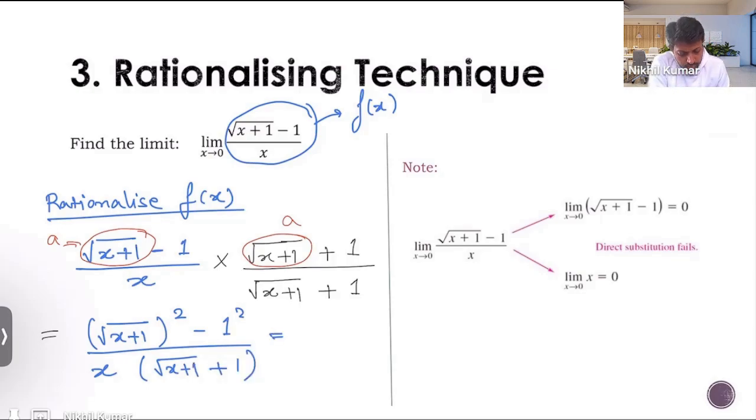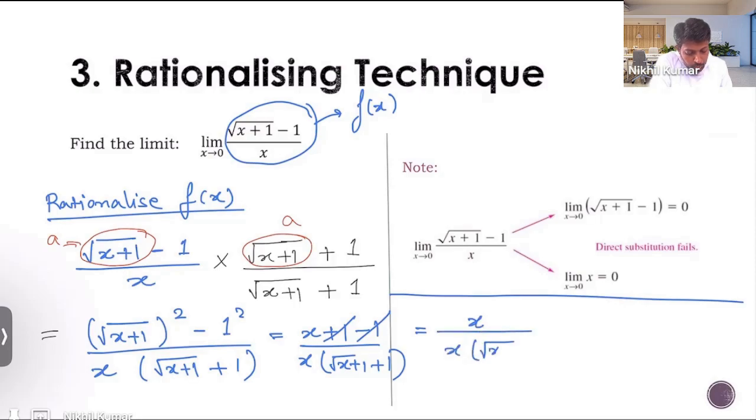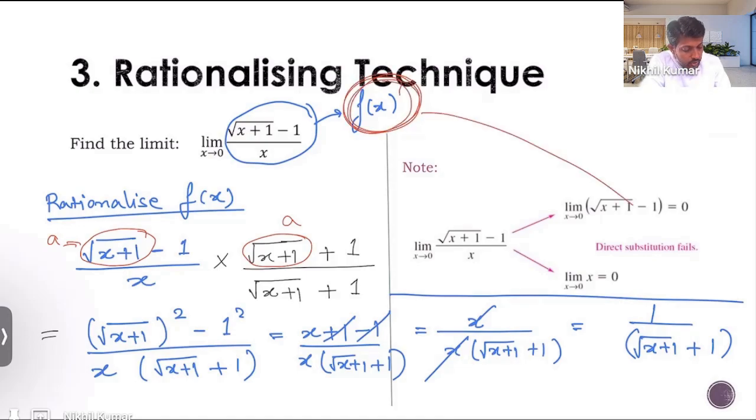Square of square root of x plus 1 simply gives me x plus 1. And then we have minus 1 there. In the denominator, we have the same thing x into root x plus 1 plus 1. Now, plus 1 minus 1 gets cancelled. This can be written as x upon x into root x plus 1 plus 1. x and x in the numerator and denominator get cancelled. We are left with 1 upon root x plus 1 plus 1. So what we have done till now is we have reduced this function f of x into this form.